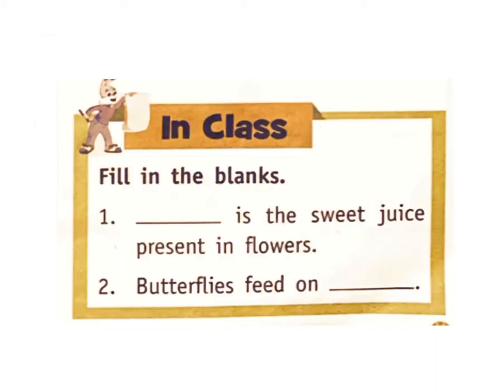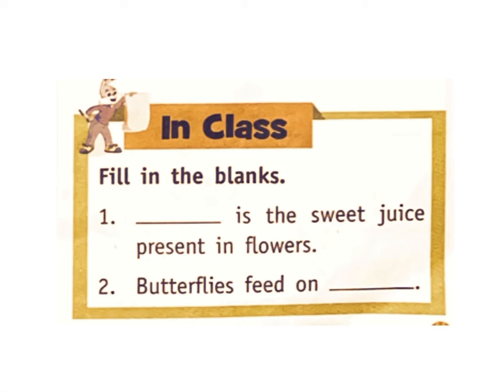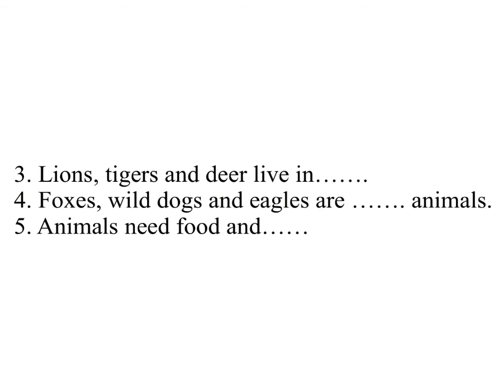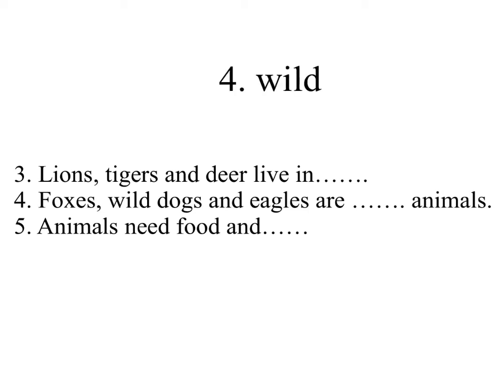Fill in the blanks. 1. What is the sweet juice present in flowers? Answer: Nectar. 2. Butterflies feed on — Answer: Nectar. 3. Lions, tigers, and deer live in — Answer: Forest. 4. Foxes, wild dogs, and eagles are — animals. Answer: Wild animals. 5. Animals need food and — Answer: Water.